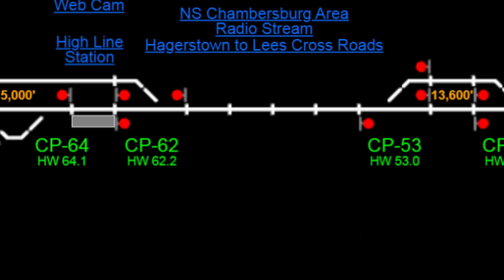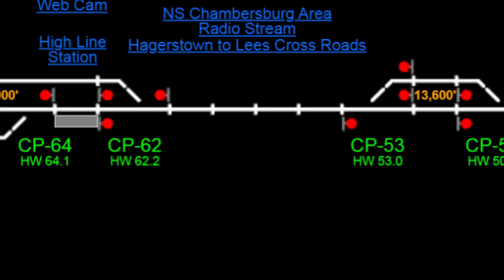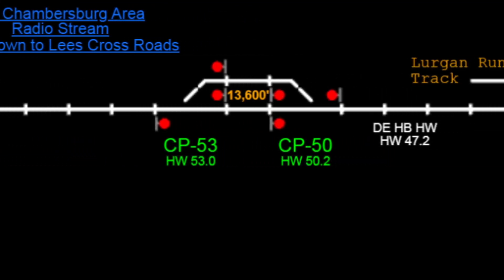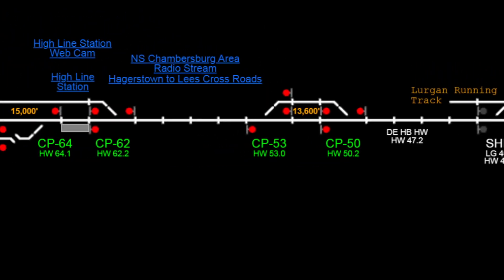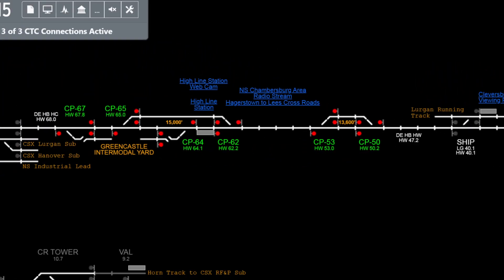This keeps us updated on the train's progress from one signal to the next. Some blocks are longer than others — this one, for example, tells us the length of the block is 13,600 feet. The block will turn red as soon as the train has entered it and will stay that way until the train has completely left it. Freight trains typically can occupy multiple blocks at once due to their impressive length.